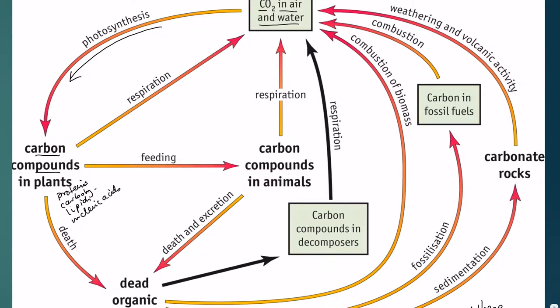All that carbon in the atmosphere that the plant uses gets incorporated into glucose, but as well as that, it's also used to make other organic molecules, and it becomes part of the plant — part of its biomass. The plant uses that carbon for its own growth via the production of these molecules.